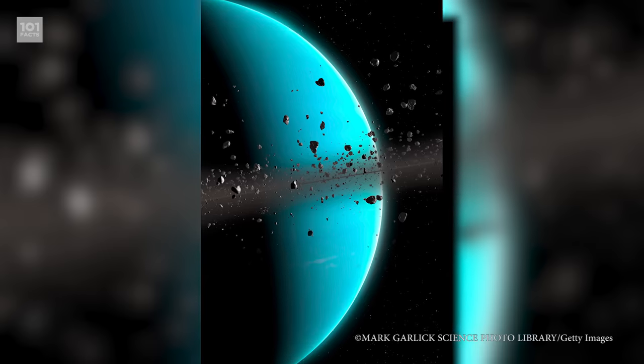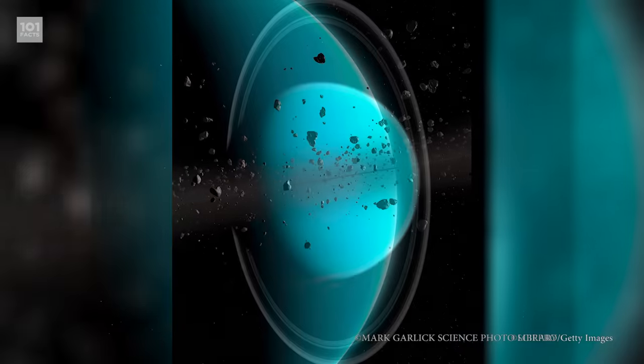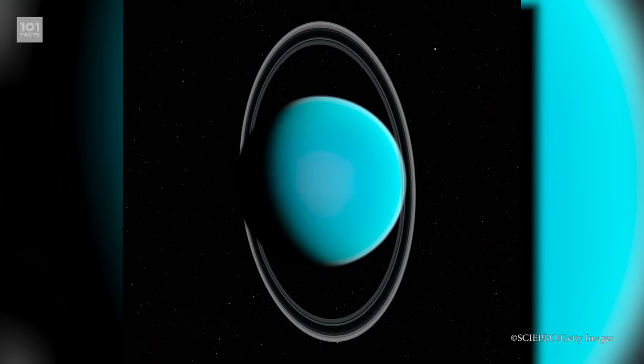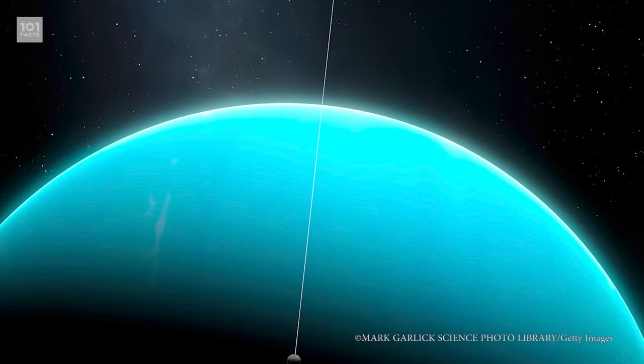Much like Venus, Uranus rotates in a funny way, too. It's not quite backwards, but it does spin on its side. It's believed that Uranus also had a collision with a celestial object that caused it to spin off its axis to the point that it was on its side.